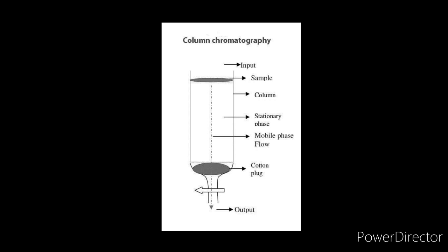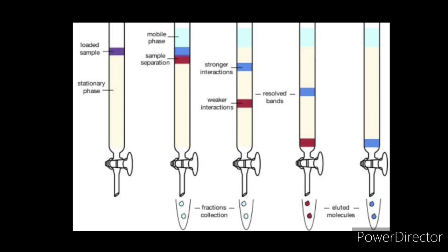Now let us understand the types of column chromatography. On the basis of property of stationary phase, that is adsorption and molecular sieving, column chromatography can be classified into two types: first is adsorption chromatography, and second is gel filtration, that is exclusion column chromatography.